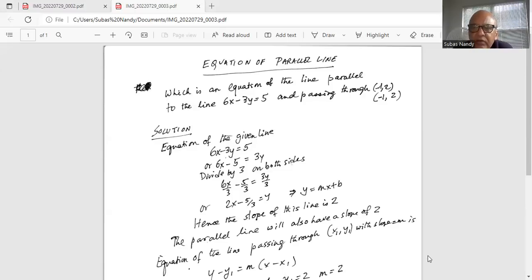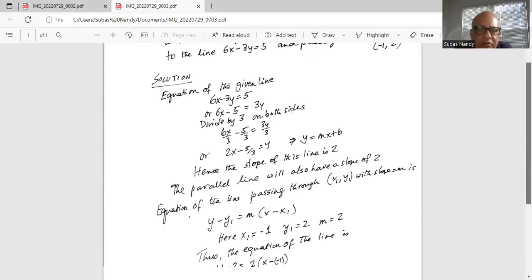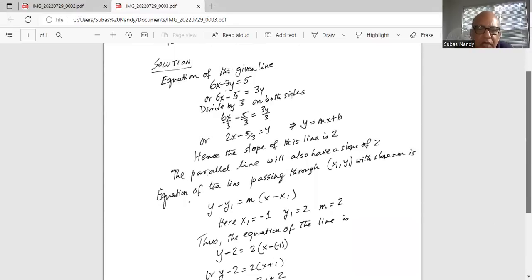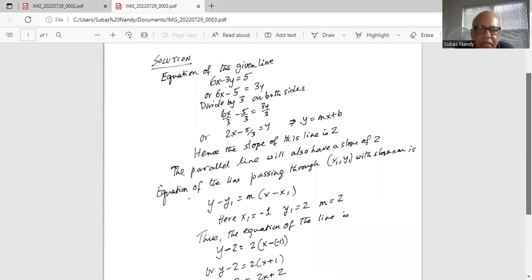Equation of the line passing through x1, y1 with slope m is y minus y1 equal to m times x minus x1. My m is 2, x1 is minus 1, y1 equal to 2. So we substitute back y minus y1, that means y minus 2 is equal to slope is 2x minus minus 1.